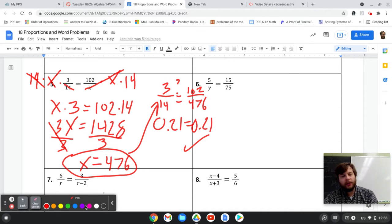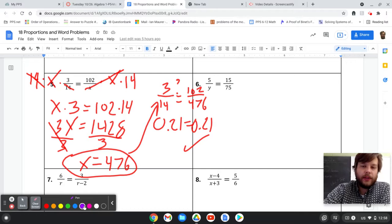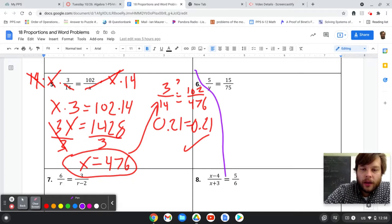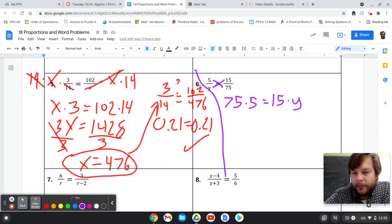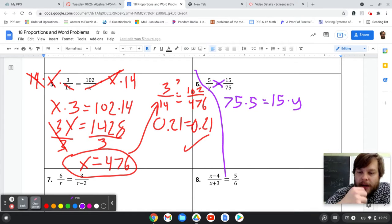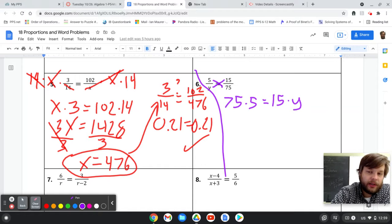I'll do problem 6 just a little bit quicker so you can see the process all going through. I multiply both sides by y and multiply both sides by 75. So I have 75 times 5 equals 15 times y. What happened there? I multiplied both sides by y, so it canceled y on the left. And I multiplied both sides by 75, so it canceled the 75 on the right. They moved across the problem, which is why a lot of people call it cross-multiplication.